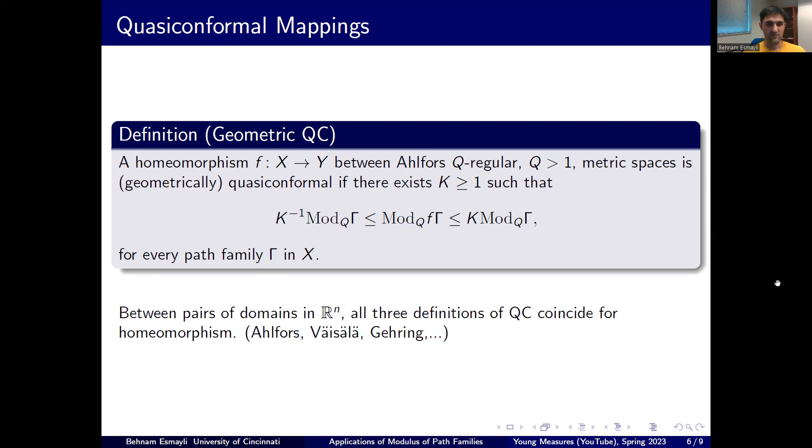So we can use this as a definition of quasi-conformality. And, but then there are at least two other definitions of quasi-conformality if you are in Rn through usual derivatives. So for example, we can say that a Sobolev function is quasi-conformal if its Jacobian can control the norm of the derivative up to powers. And then there's also the infinitesimal metric definition of quasi-conformality. One of the fundamental results in the theory is that these three definitions coincide if we deal with open domains in Euclidean spaces.